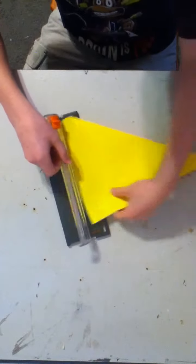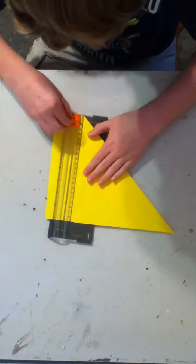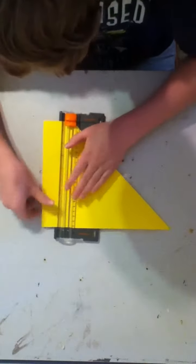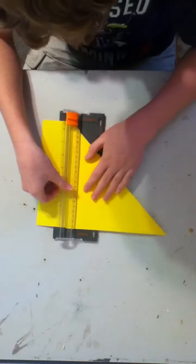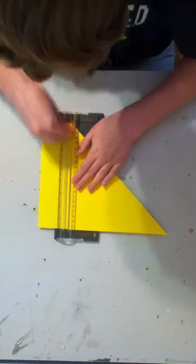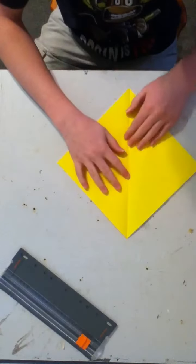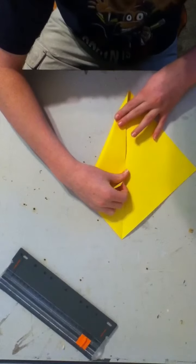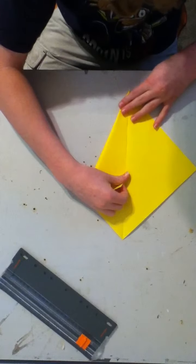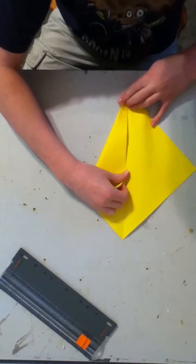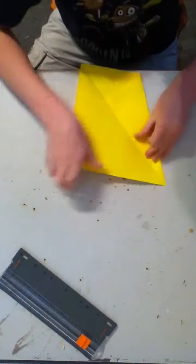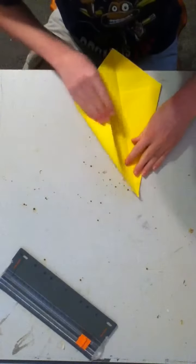And what we do is just cut it off. After that, you want to take this corner and fold it over to here, to the crease we just made. And then make a crease. And the same for this one.